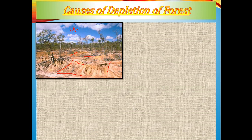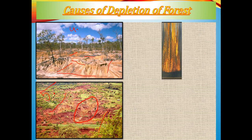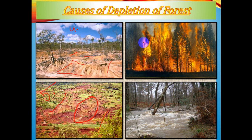The fifth cause is desertification — areas that previously had trees and bushes are getting deserted. Due to deforestation, we are creating extended deserts. The sixth and last cause is natural disasters such as forest fires, like the Amazon forest fire, which create massive environmental damage.